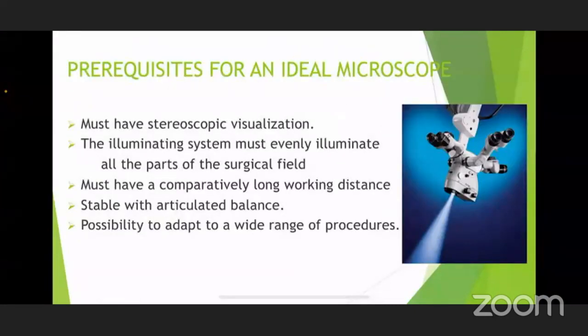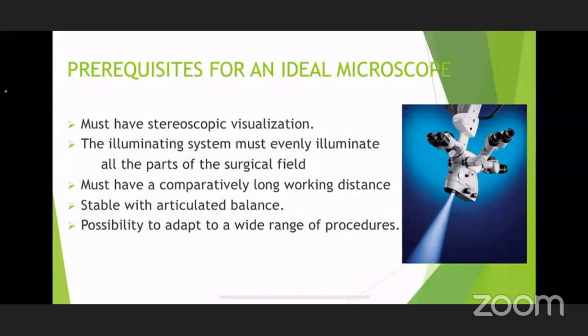What are the prerequisites for an ideal microscope? Ideally, you should have good stereoscopic visualization. The illumination system should evenly illuminate the entire surgical field. There should be a long working distance so that your instruments do not touch any part of the microscope and become unsterile. The microscope itself should be very stable, and it should have the possibility to adapt to a wide range of procedures, whether anterior-segment or posterior-segment surgery, because we need different depths of focus for all of these.